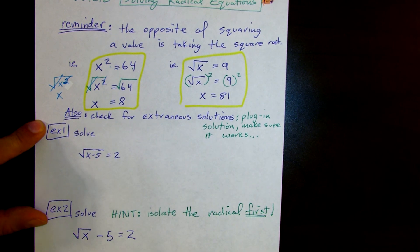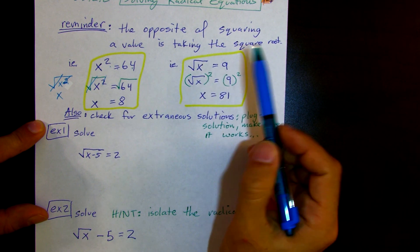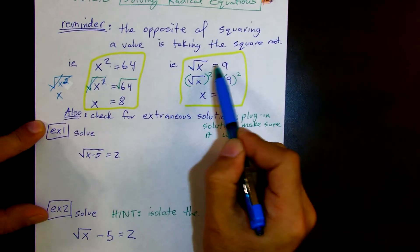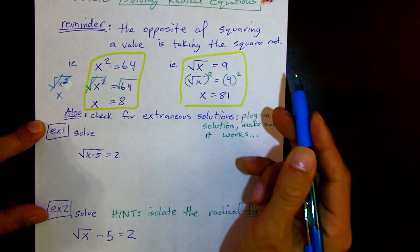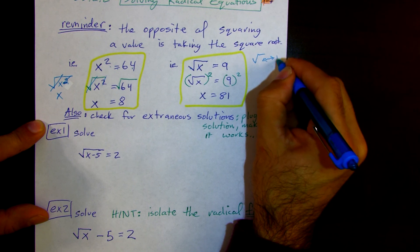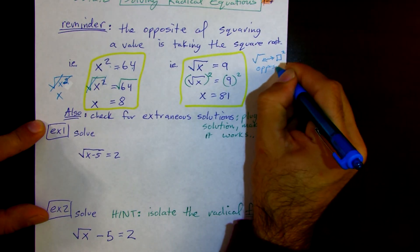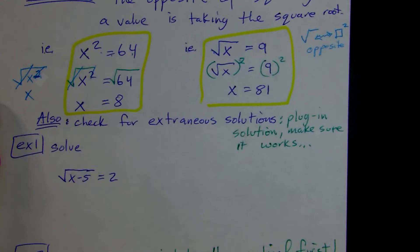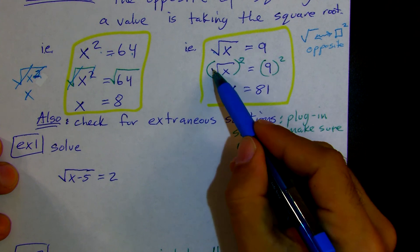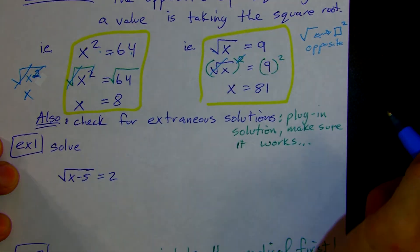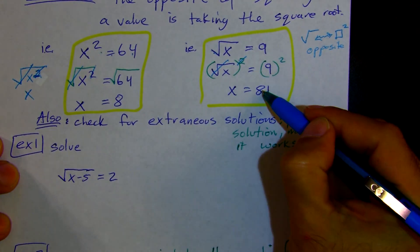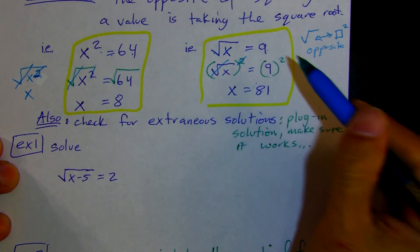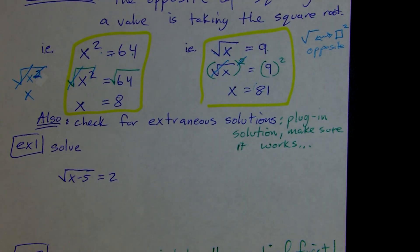If x squared equals 64, we square root both sides — canceling out the squared value, getting x by itself, equal to the square root of 64, which is 8. Now, today's lesson is more like this: the square root of x equals 9. I would square both sides. The square root is the opposite of squaring, and we always do the opposite operation to get rid of that component. Square root of x squared cancels out, leaving x. Nine squared is 81. And the square root of 81 is 9 — it checks out.